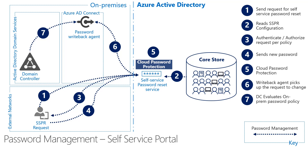Of course, we need to respect that the password would need to be evaluated against any password policies that you might have set up on your domain controllers. So in step seven, the password writeback agent calls the Win32 native API to set the password against the on-premises AD password policy, to make sure that the new password complies with both the cloud and the on-premises password policies.